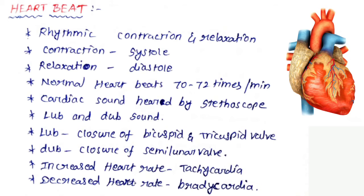The heartbeat is formed by rhythmic contraction and relaxation of the heart. The contraction is called systole, and relaxation is called diastole. The normal heartbeat is 72 times per minute.